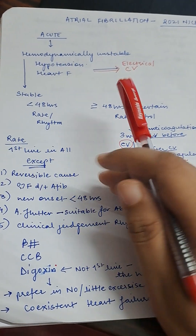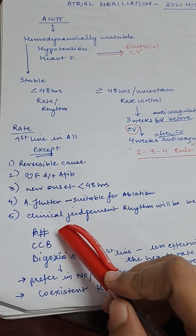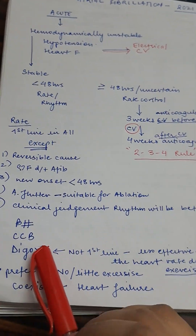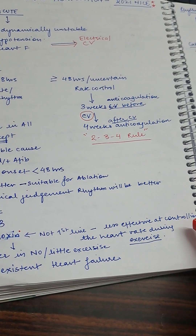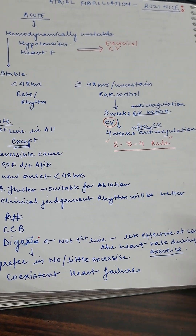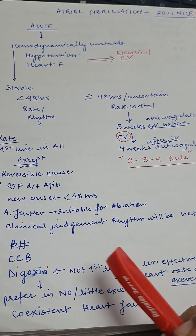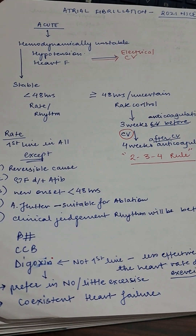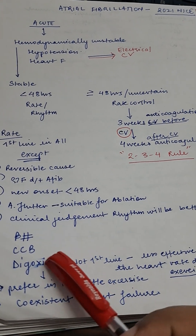Rate control is the first line in almost all patients. For rate control, give beta-blockers, calcium channel blockers, or digoxin. Digoxin is no longer the first line because it is less effective at controlling heart rate during exercise. Prefer digoxin in patients with heart failure, elderly patients, or frail patients with little or no exercise.